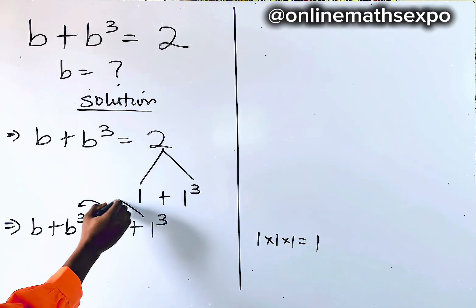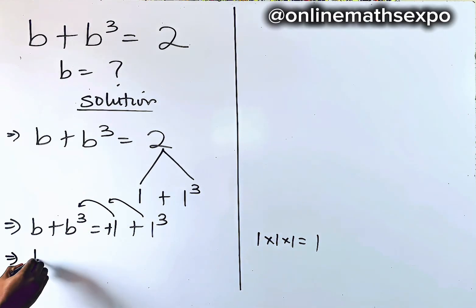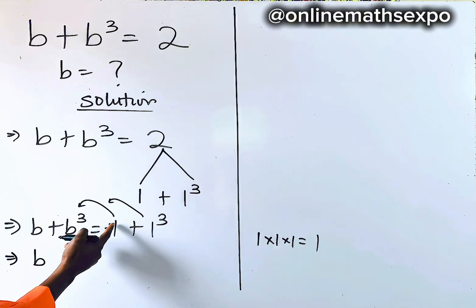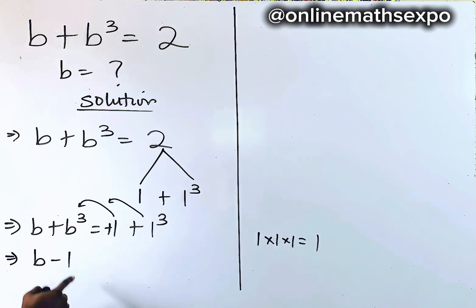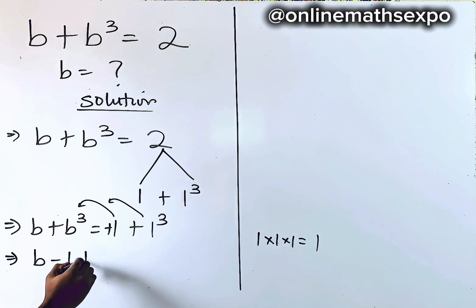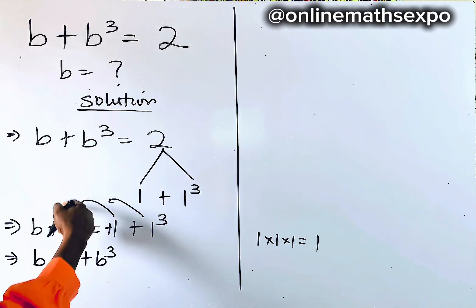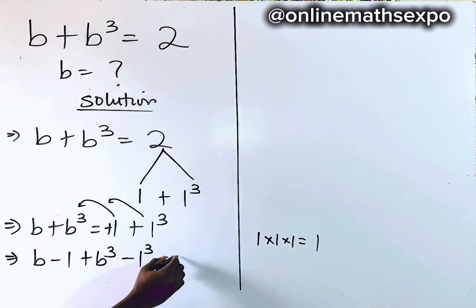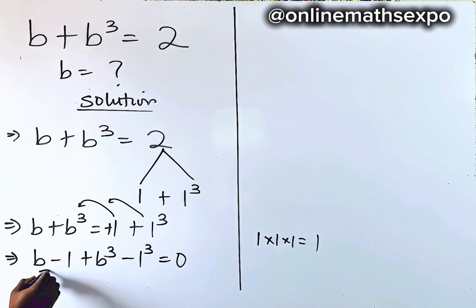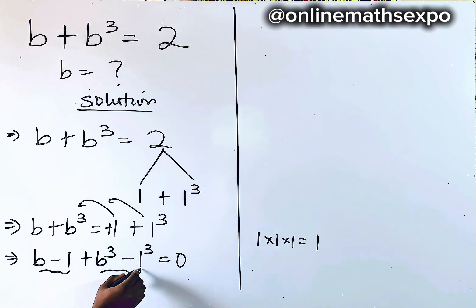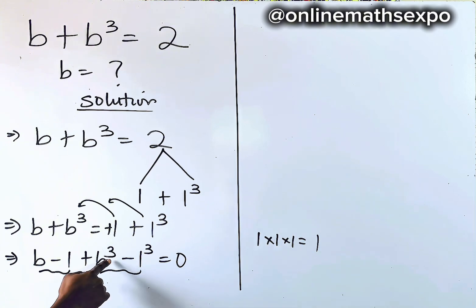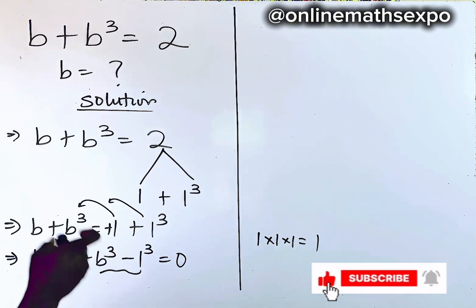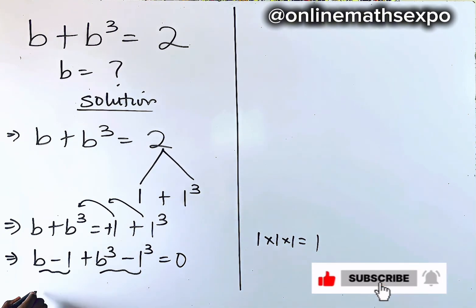Taking everything to the left side, this implies we have (b − 1) + (b³ − 1³) = 0. These two terms are now grouped together — two cubes — and this reminds us of a difference of cubes identity.